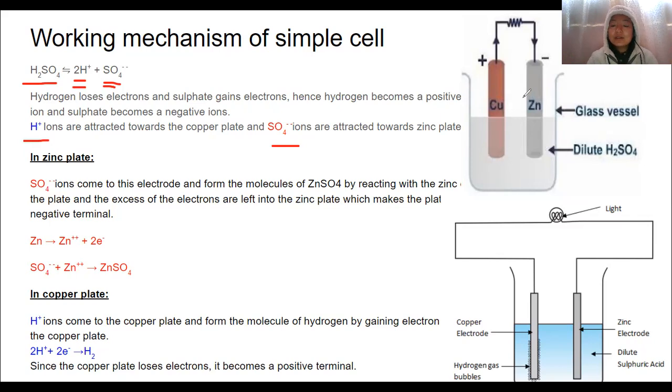We have these two metallic plates or electrodes which are copper and zinc. Other than these metals, we can use metals like aluminum, we can even use graphite, we can use platinum, magnesium, etc. But here, we've taken copper and zinc. We need to know this fact that metals, they always want to become positive. Metals tend to lose electrons and they want to become positive.